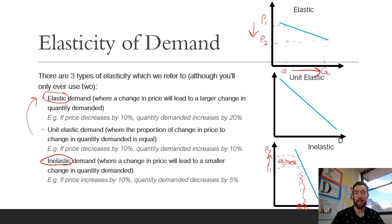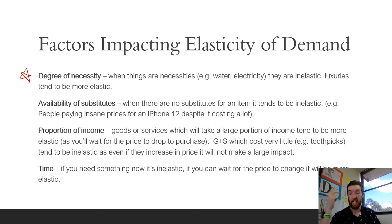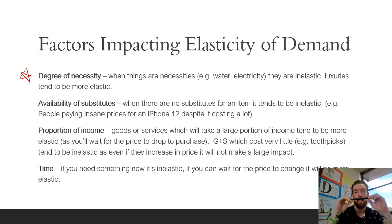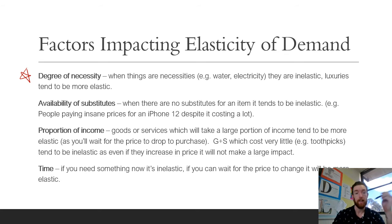Factors that affect whether something is elastic or inelastic — first up, the degree of necessity. When things are necessities — for example, water, electricity, internet — they are inelastic. Luxuries tend to be more elastic because you don't need it right now, it's just a treat. If you are a diabetic and the price of insulin goes up, you're going to buy it because you need it to live. Whereas if the price of lollies changes, it's a luxury, so the changing price is probably going to affect your demand a lot.